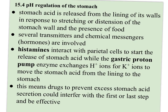Stomach acid is released from the lining of its walls in response to stretching or distention in the stomach wall, as well as the presence of food. Several transmitters or chemical messengers — what we usually think of as hormones — are involved in signaling that it's time to produce the HCl and then to release it. Histamines are part of that system; they interact with the parietal cells to start the release of stomach acid, while the gastric proton pump enzyme exchanges H+ (the acid ions) for K+ ions to move the stomach acid from the lining into the stomach itself. So if you want to prevent excess stomach acid, you could either interfere with the histamines or interfere with the gastric proton pump — and either one could be effective.